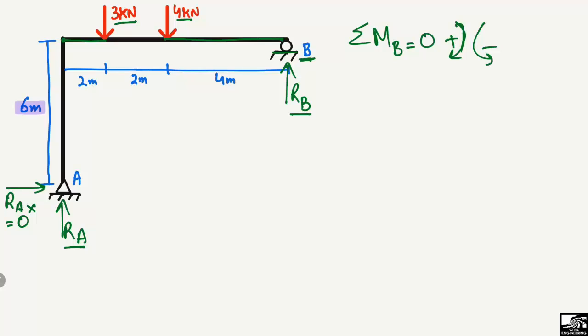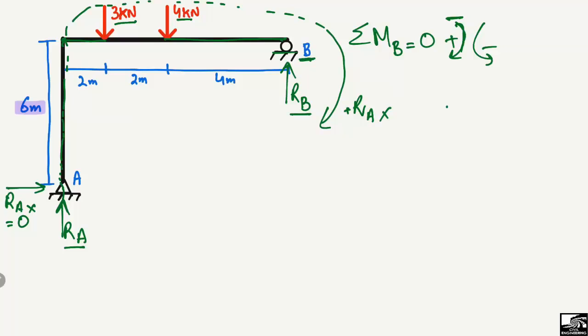The first force that creates a moment about point B is the reaction RA, acting in the upward direction. This creates a clockwise moment about point B, so it is taken as positive. Therefore, RA is positive, and we multiply it by the moment arm. Moment equals force times moment arm.